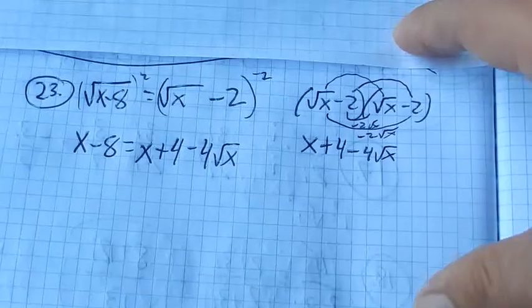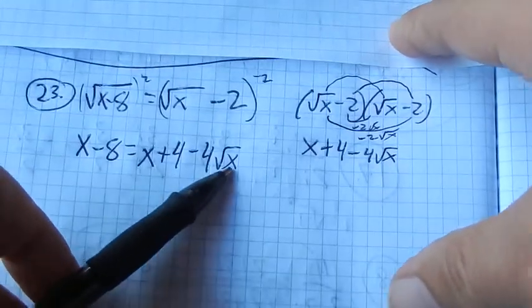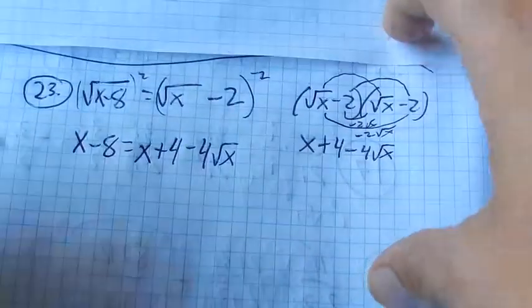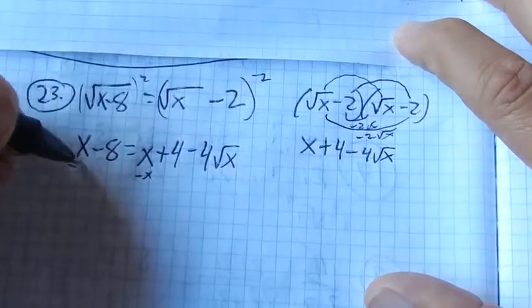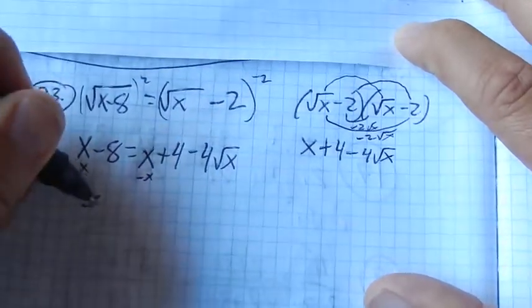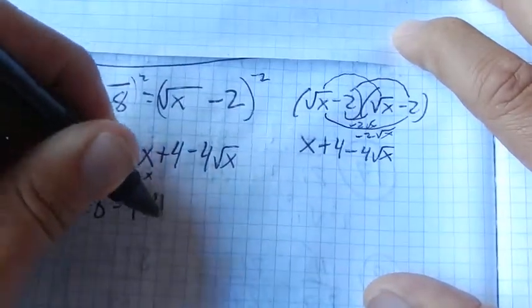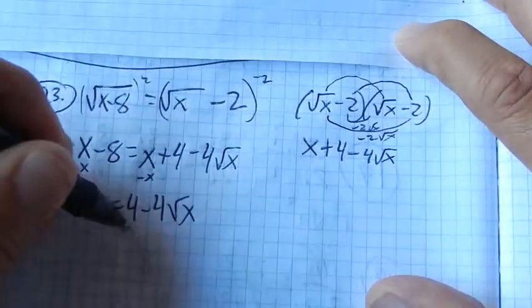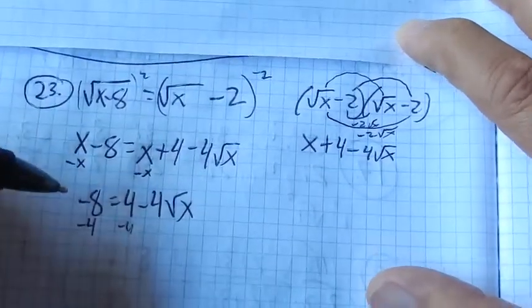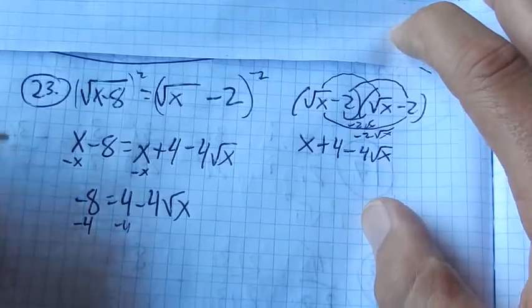But I can get this alone and then square both sides again. So let me do that. I'm going to subtract x from both sides, that x cancels. Subtract 4 from both sides, that gives me negative 12.